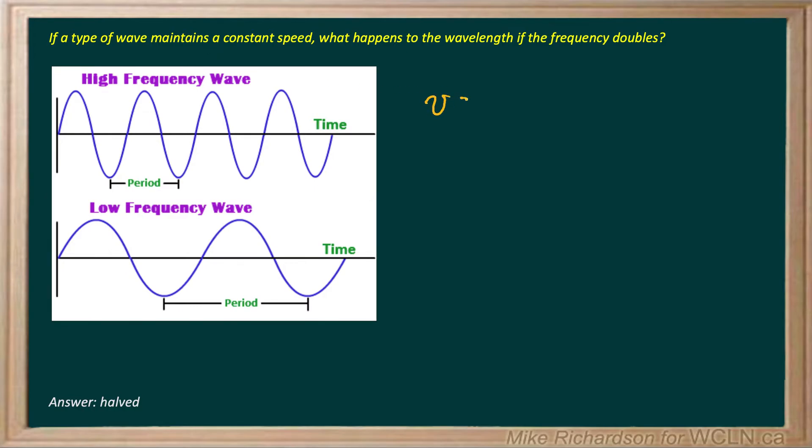Now we know the relationship. V is equal to f lambda, and they're saying V stays constant. So really what I've got is some constant is related to frequency times wavelength.